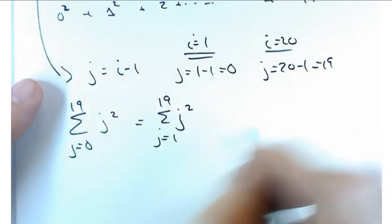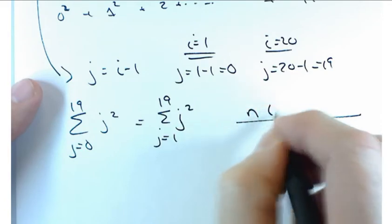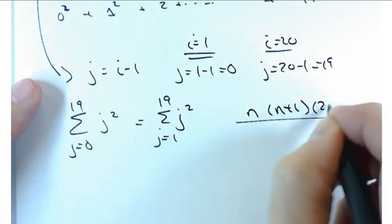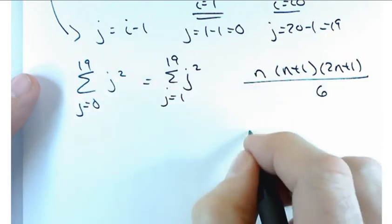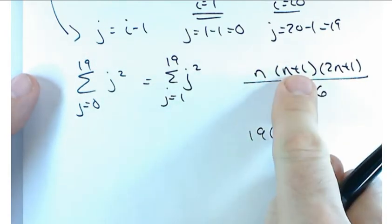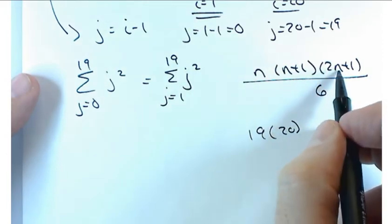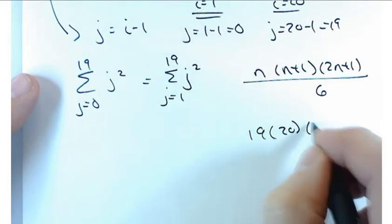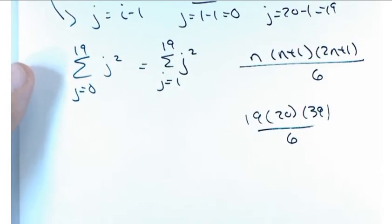So, the formula is going to be n times n plus 1 times 2n plus 1 over 6. So, in our case n is 19 so 19 times 20, 2 times 19 is 38 plus 1 is 39 over 6. That's really what they're doing there to figure that one out.